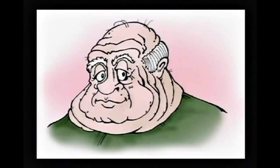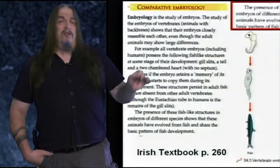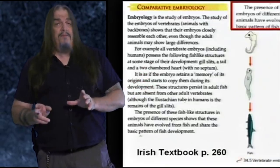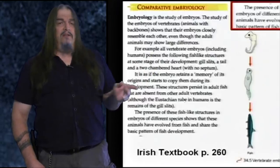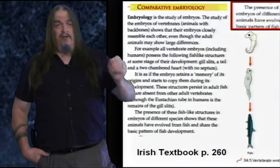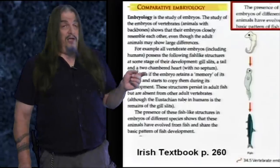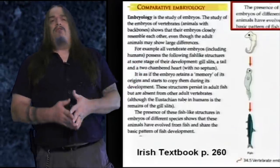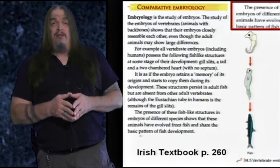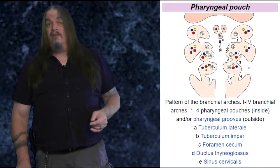Those are not gill slits. Yes, they are. Look at the preacher's own slide that he showed a moment ago. When it says fish-like structures, that means the structures are like gills — it doesn't mean that they are gills. But we can read what he didn't say and see that it says these structures persist in adult fish but are absent from other adult vertebrates, although the eustachian tube in humans is the remains of the gill slits. That's not a lie — that's correct.